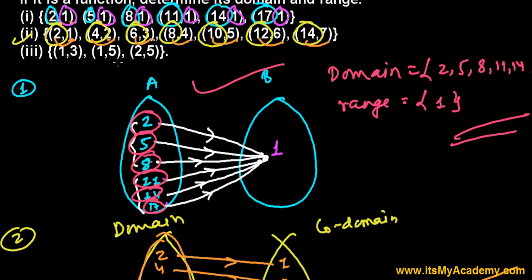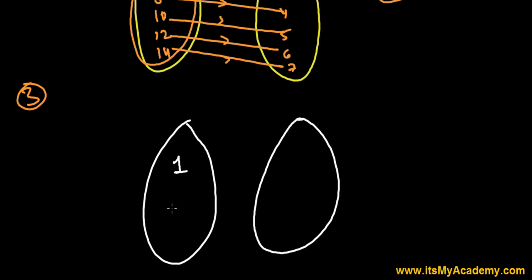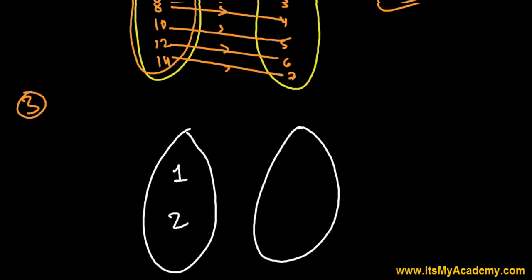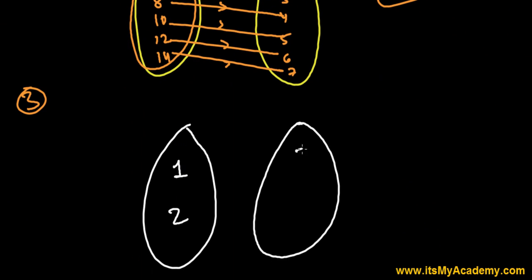Now we have 1, 3, 1, 5, 2, 5. From the question itself we can say this is not a function because this 1 is having two images, 3 and 5. Anyways, let's draw the balloon. I love solving the relations and function questions with balloon method. 2, no 3, and in codomain or you can say range that is 3, 5, 5, 3, 5. So 3 and 5.